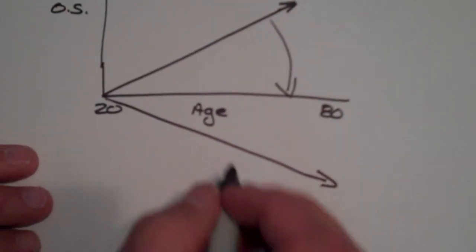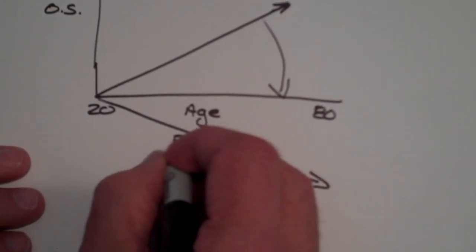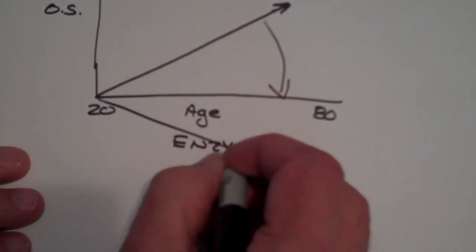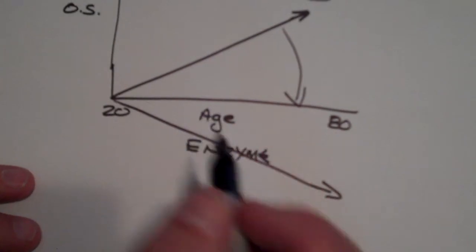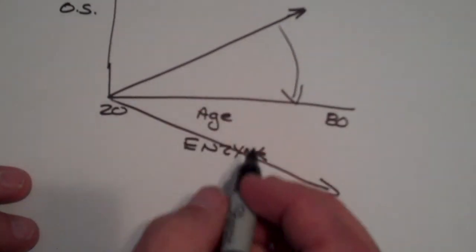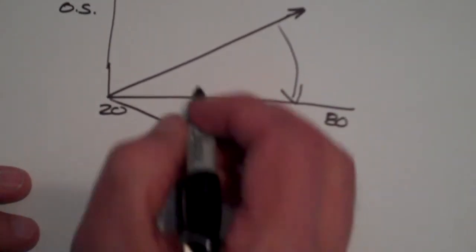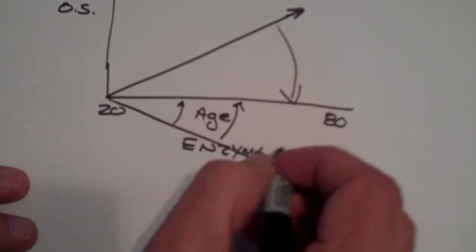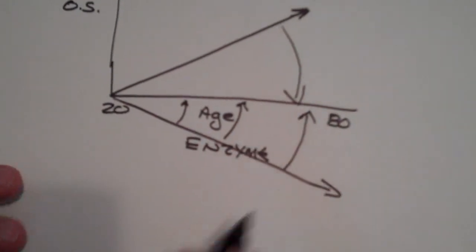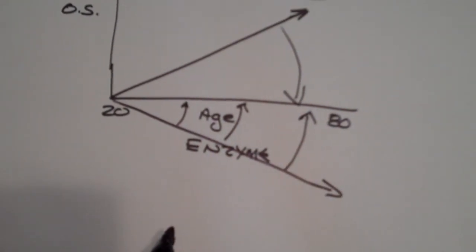But we now know another thing happens as we age and our enzyme activities decrease as we age. And taking one Protandim a day brings this back up to when we were much younger. So after 30 days, after 60 days, after 90 days and so on, it brings this back up.